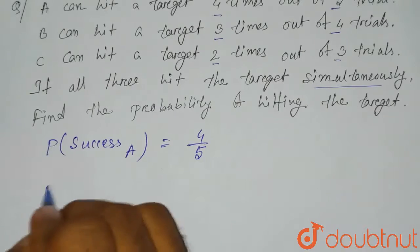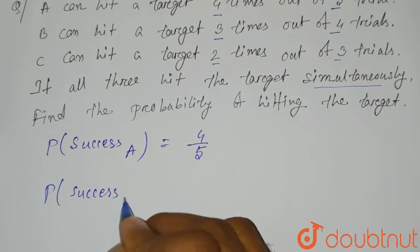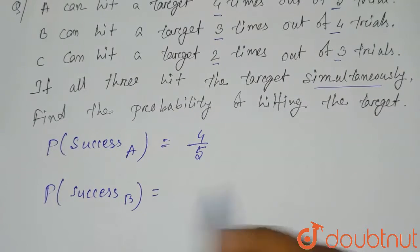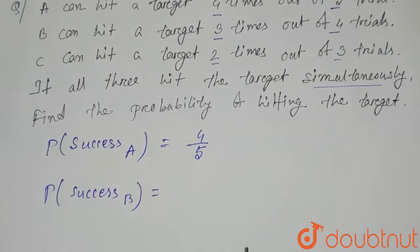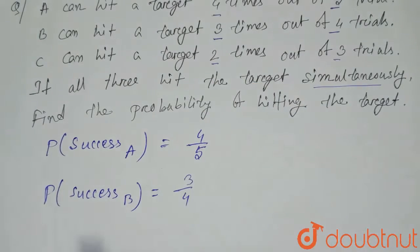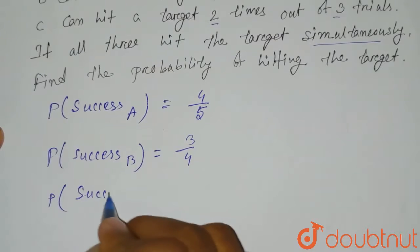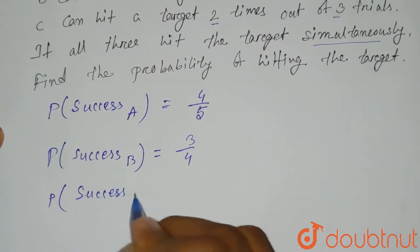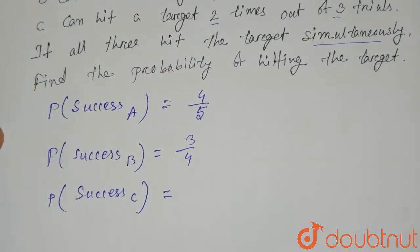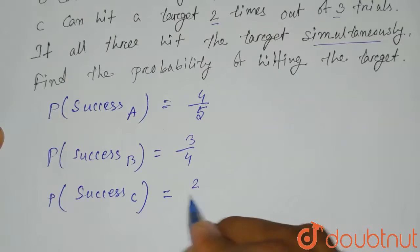Similarly, the probability of success of B will be equal to 3 by 4, since B hits 3 times out of 4. And the probability of success of C will be equal to 2 by 3, because C hits 2 times out of 3 trials.